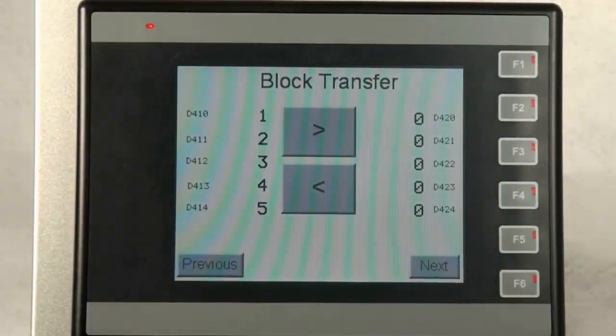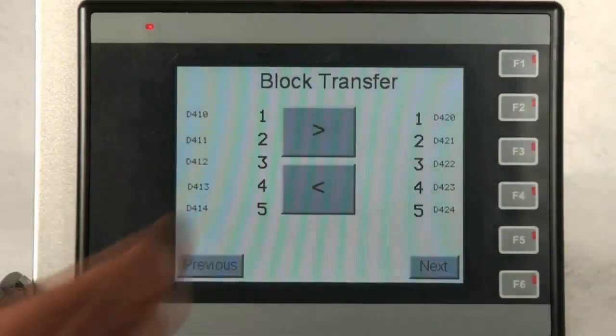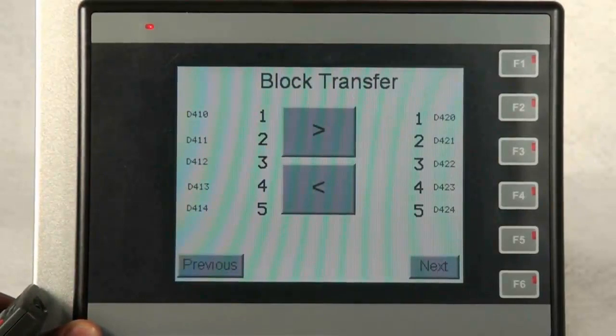When I press the right arrow button, the values in the left column registers are transferred or moved to the right column registers.